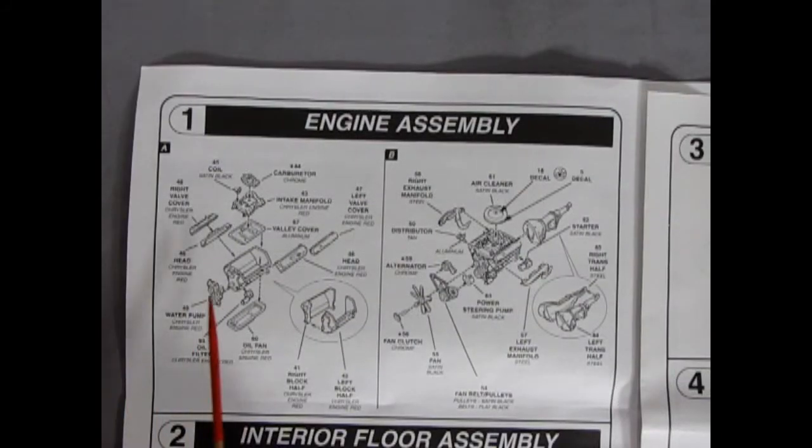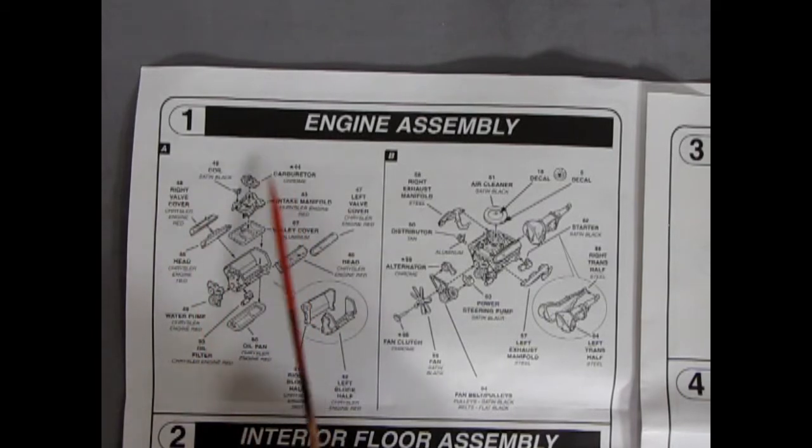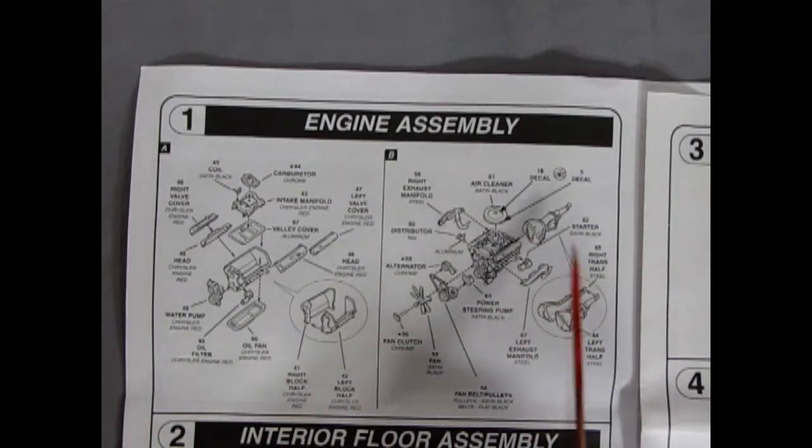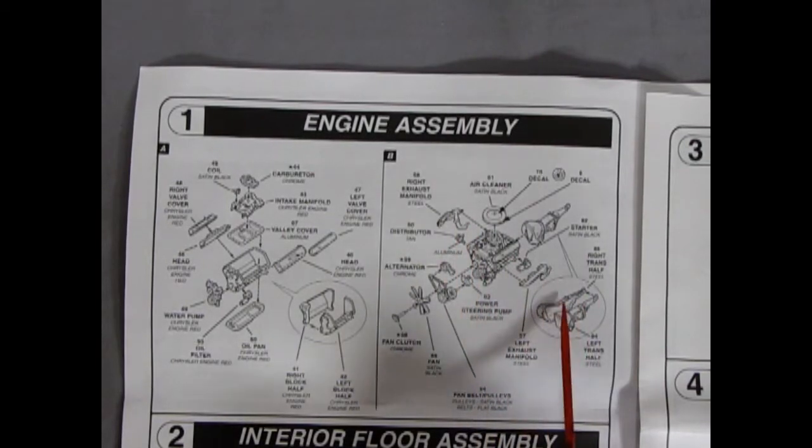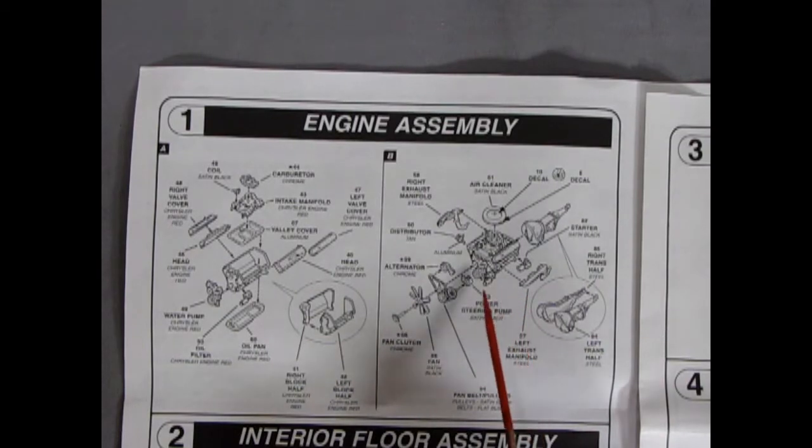In panel one, we have our engine assembly and this is in A and B sections. So for the A section, we have a carburetor intake manifold coil. You have your valve covers and cylinder heads going on there. The engine block is a two-piece and it's all hollow on the top. Water pump gluing on our oil filter and our oil pan. And then as we come across into the B section, we have our exhaust right and left manifolds going on. We've got our starter coming in underneath here. The two-piece transmission going on. Our air cleaner with a decal and then power steering pump, alternator, the belts and pulleys, the fan and the fan clutch.